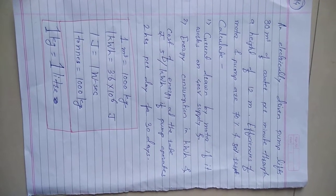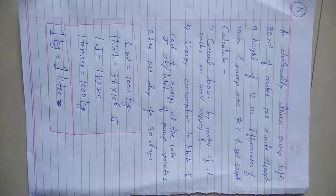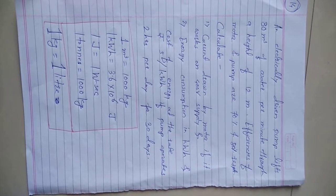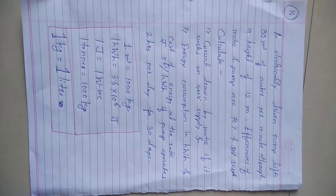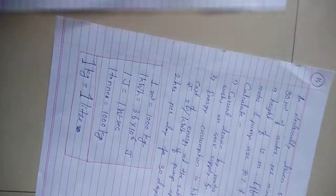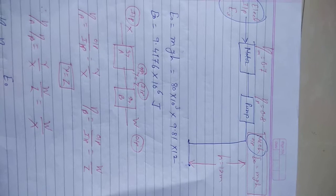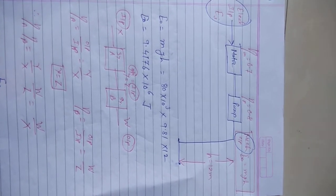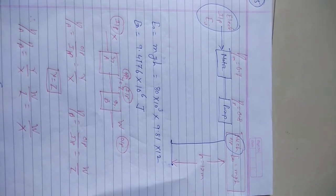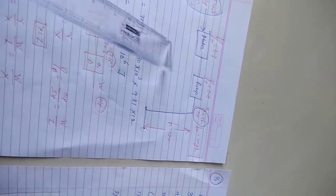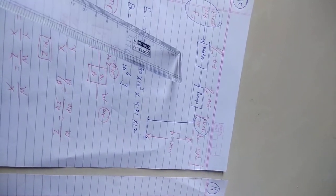This is the fourth video on the elementary concept portion of Unit 4. In this video, we are going to solve a numerical on an electrically driven pump. The pump lifts 80 cubic meters of water per minute through a height of 12 meters. The efficiency of the motor is 70% and the efficiency of the pump is 80%.